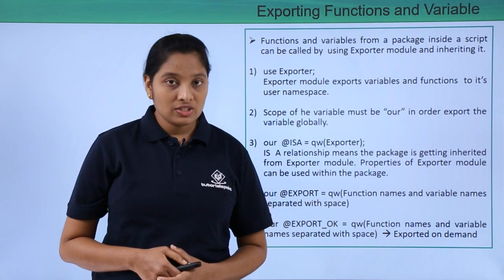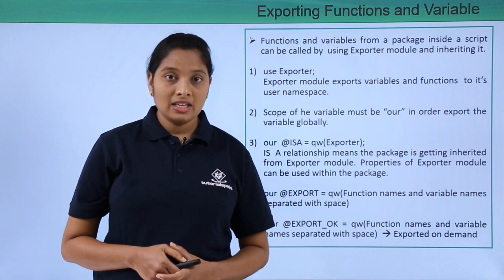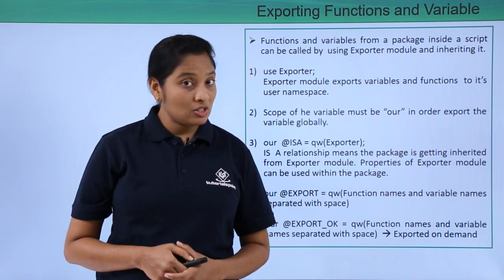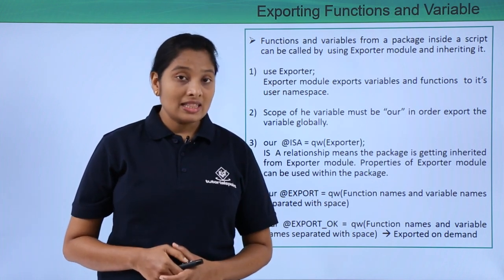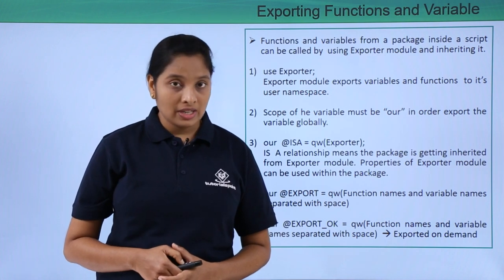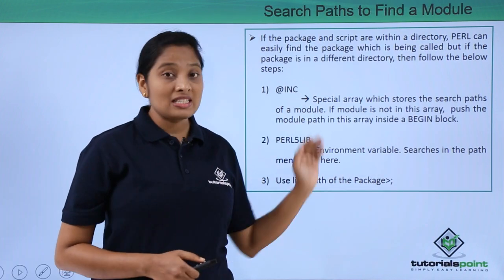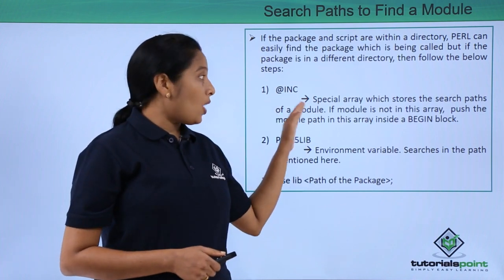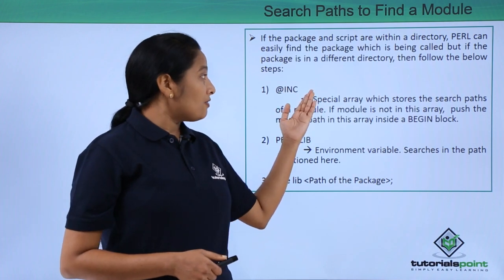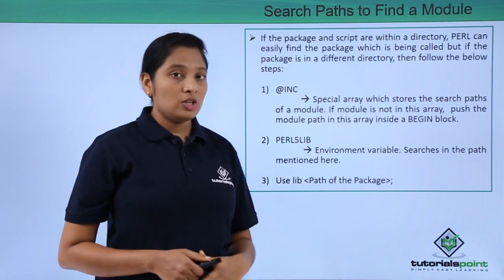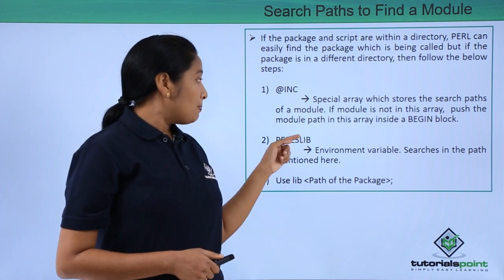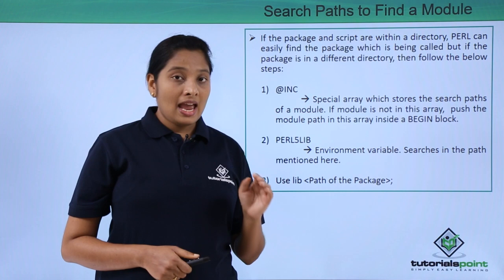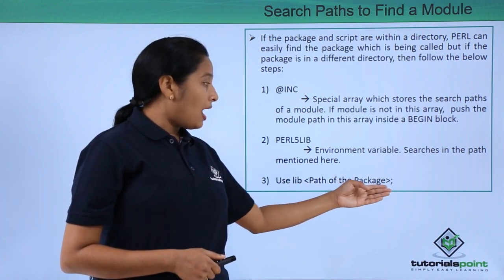When you have a package and script in the same directory, there is no need to worry. But if your package is in a different directory and you are accessing variables or subroutines from a different directory, there are three things to check. First, the @INC array — this is a special array where you have all the search paths, so you have to ensure your package is in one such path or push that path into this array. Second, PERL5LIB — this is an environmental variable having the search paths, and you have to initialize it. Third, at the start of your script, give use lib followed by the path of the package.